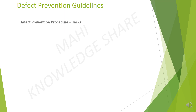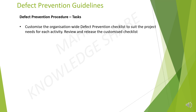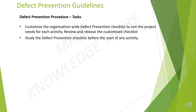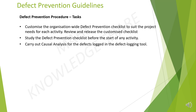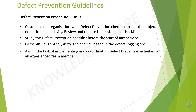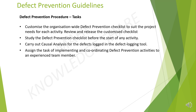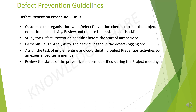Step 2: Task. We need to customize the organization-wide defect prevention checklist to suit the project needs for each activity. Review and release the customized checklist to all the stakeholders. Then, all the team members should study the defect prevention checklist before the start of any activity. Then, carry out causal analysis for the defects logged in the defect logging tool. Then, assign the task of implementing and coordinating defect prevention activities to an experienced team member. Then, review the status of the preventive actions identified during the project maintenance.